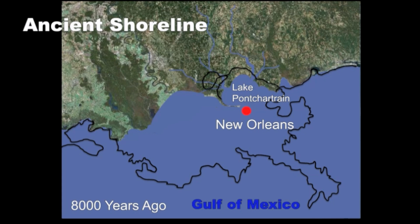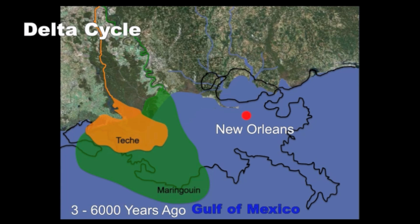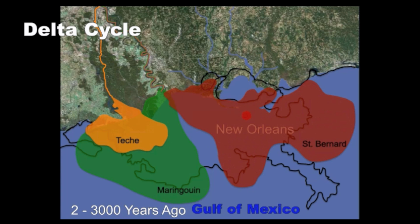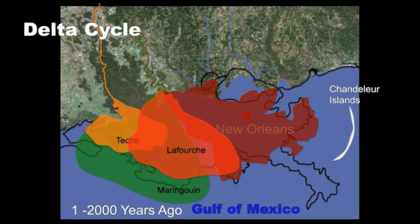Sea level rise then slowed and the river began building up sediments along the coast. Scientists call these deposits delta lobes. Additional delta lobes were formed as the river switched from east to west and back again.